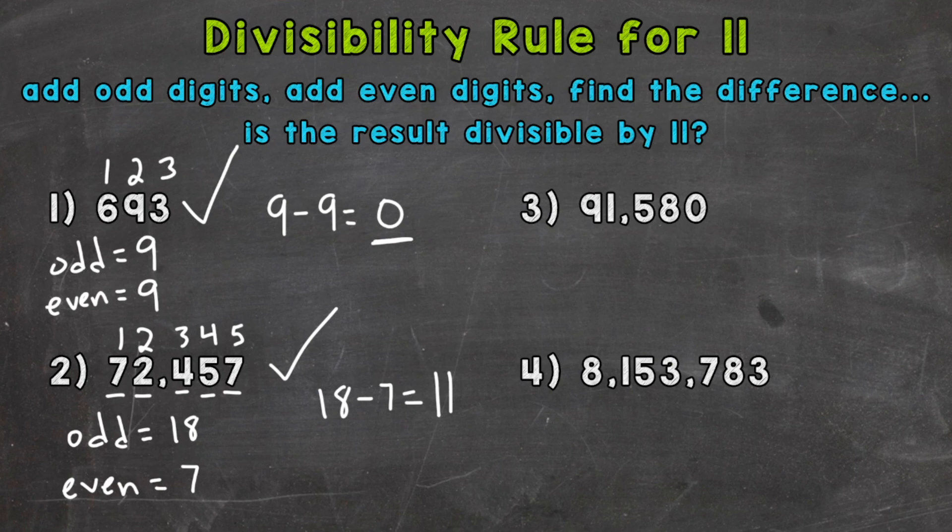On to number 3, where we have 91,580. So let's count off 1, 2, 3, 4, 5. So odd and even. So odd, we have 9 plus 5 is 14, plus 0. So we end up with 14 here.